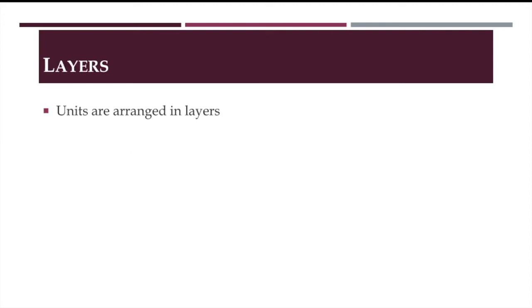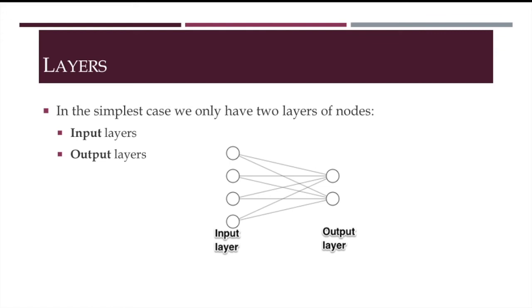These units are arranged in layers, of which there can be two or more. In the simplest case, we only have two layers of nodes in input and output positions. By the way, you will sometimes hear about single-layer perceptrons as a simple neural network, but in this case we are talking about layers of connections, as we only have one layer of connections.